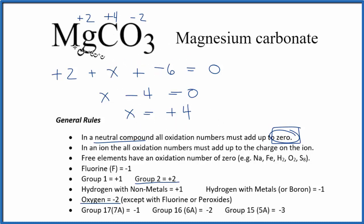So if you add up all the oxidation numbers on each element here, we're going to end up with +4 for the carbon in MgCO3, magnesium carbonate. This is Dr. B and thanks for watching.